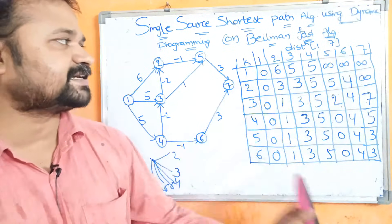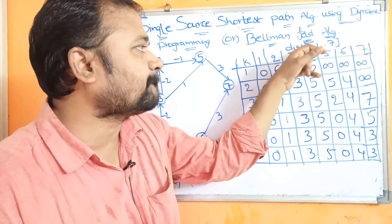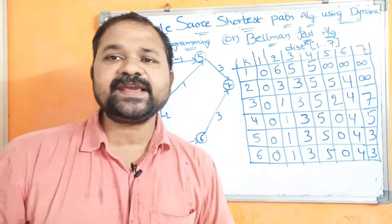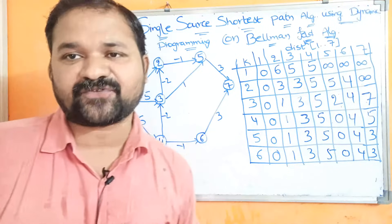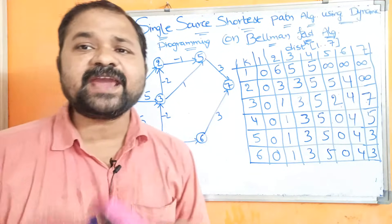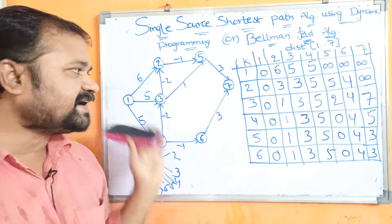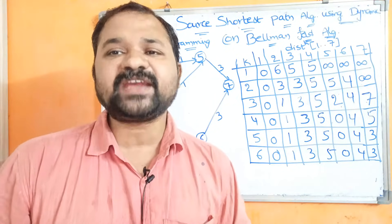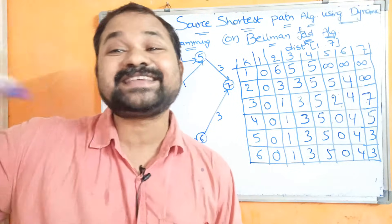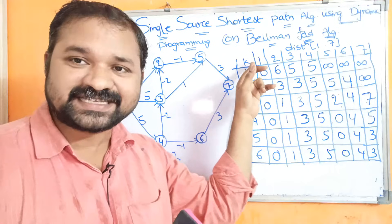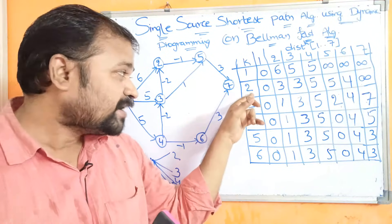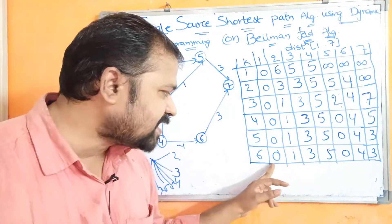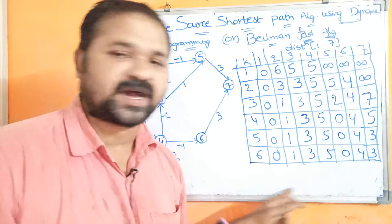For this we use a table: DIST^K of 1 to 7, where 1 to 7 specifies that we have 7 vertices in the graph. K means the number of edges. Since the graph has 7 vertices, the maximum number of edges we can have is 7 minus 1, that is 6 edges. So K represents edges: 1 edge, 2 edges, 3 edges, 4 edges, 5 edges, 6 edges. The table records the minimum cost.